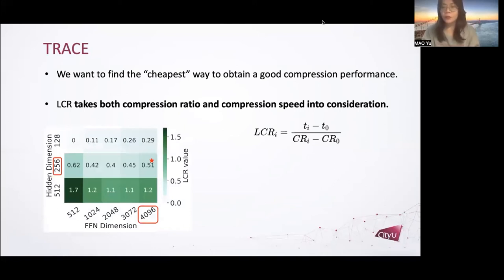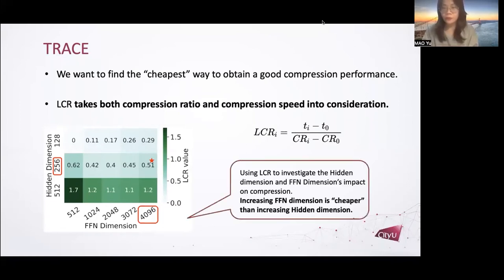Here's a specific example utilizing LCR to investigate the hidden dimension and the FFN dimension's impact on compression tasks. We can see from the figure that increasing FFN dimension is cheaper than increasing hidden dimension. And our transformer baseline compressor's hidden dimension is settled as 256 and FFN dimension is settled as 4096 respectively according to this LCR heat map.